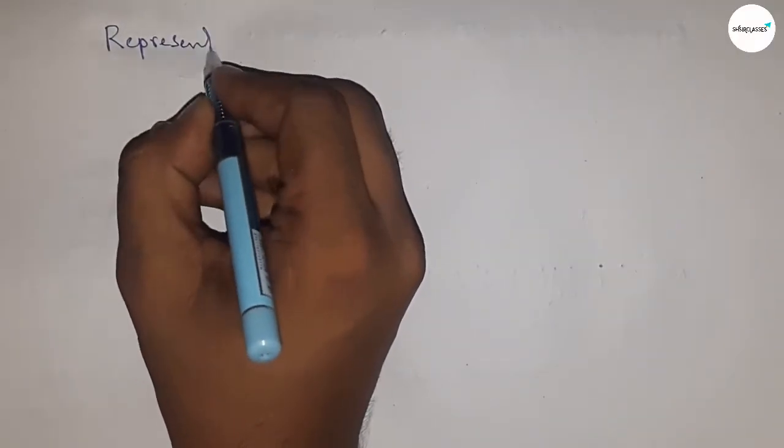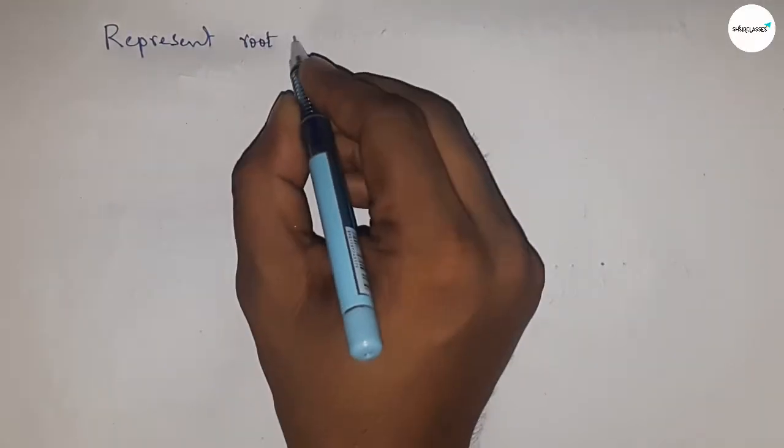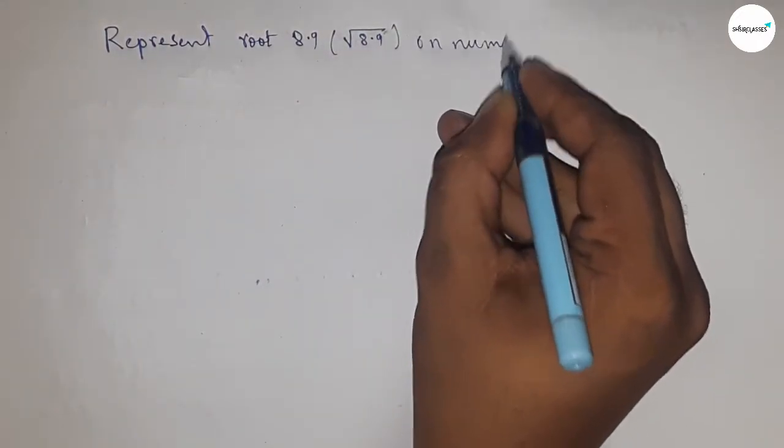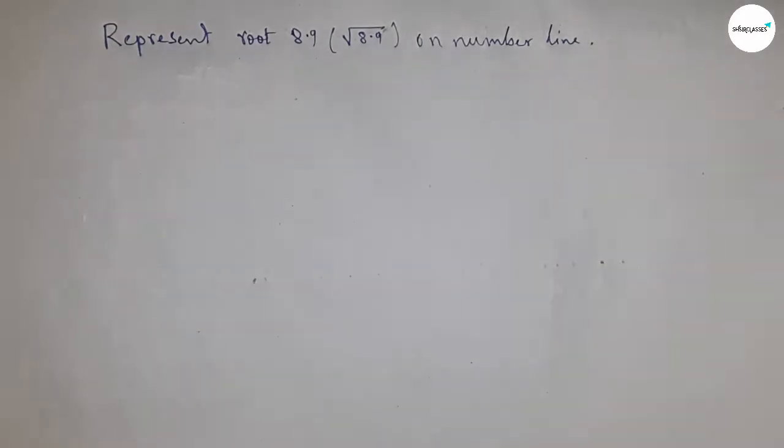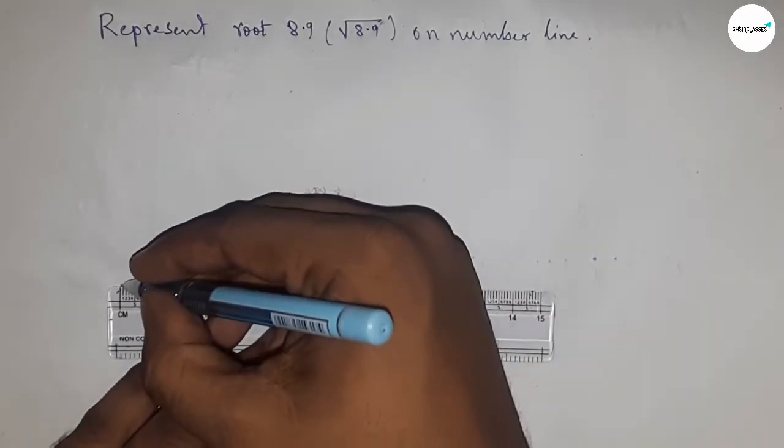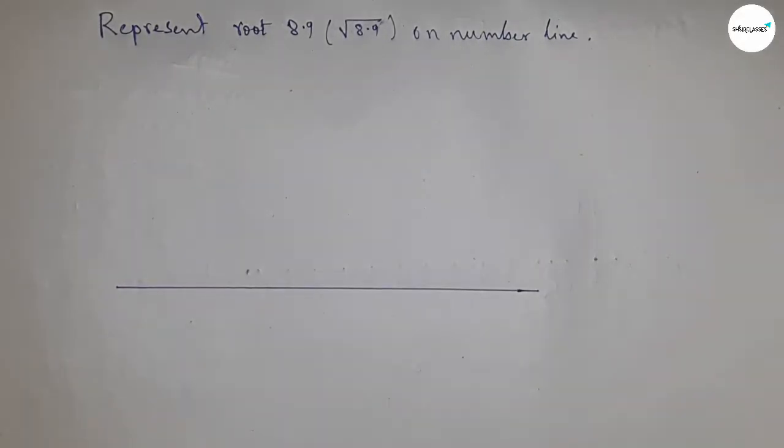Hi everyone, welcome to SSR classes. Today we're talking about how to represent root 8.9 on a number line. So today we're representing root 8.9 on a number line. Let's start. First of all, drawing a line of any length and this is the AX line.